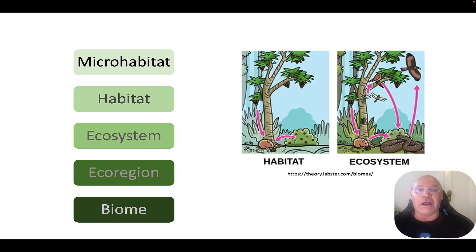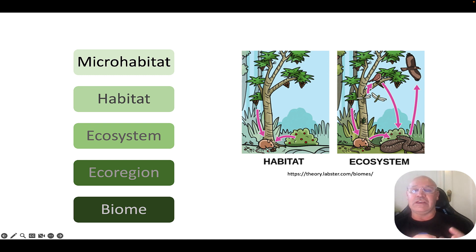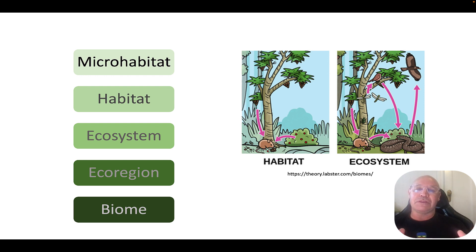We can look at this from a hierarchy point of view. We start with our microhabitats within our habitat, and then of course our ecosystem, the eco-region we just mentioned, and then biome, which I'm going to talk about in a second. Just to remind you, a habitat is basically where organisms live. The ecosystem is interested in both the living and non-living aspects. So they're not really the same thing, but you could organise them hierarchically — microhabitats within habitats, habitats within ecosystems.